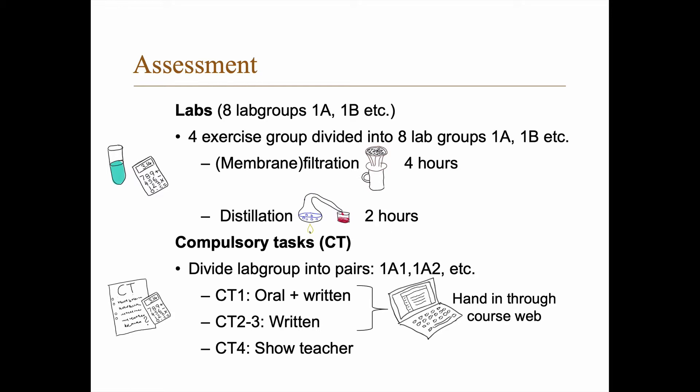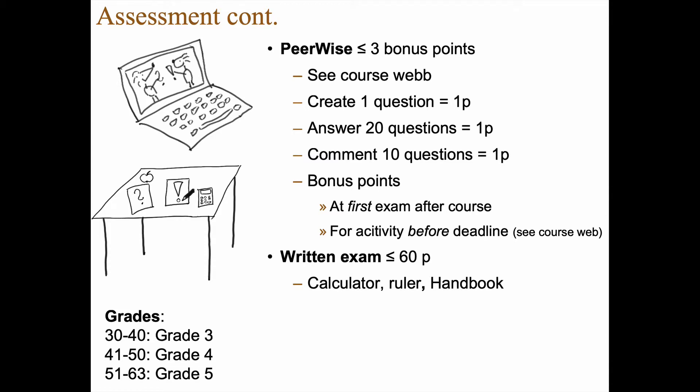So CT one, two and three, you need to hand in through the course web and you find more information there. While using Peerwise, you can actually earn some bonus points to the first exam, the exam directly after the course. There's more information on the course web on how to get to Peerwise. You get one bonus point for creating one question, one bonus point for answering 20 questions and one bonus point for commenting 10 questions. And we only give bonus points for activity before the deadline specified at the course web and only at the first exam after the course. And it's good if you try to be active because we have seen that the students who are active in Peerwise, they typically do better at the exam even without counting the bonus points.